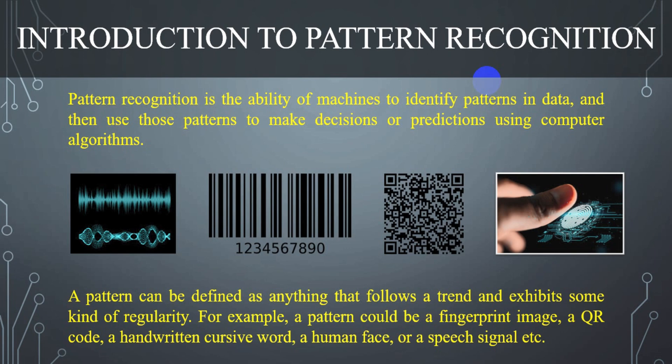A pattern can be defined as anything that follows a trend and exhibits some kind of regularity. For example, a pattern could be a fingerprint image, a QR code, a handwritten cursive word, a human face, or a speech signal. The recognition of patterns can be done physically, mathematically, or by the use of algorithms.